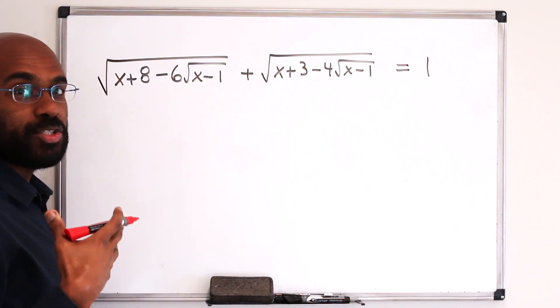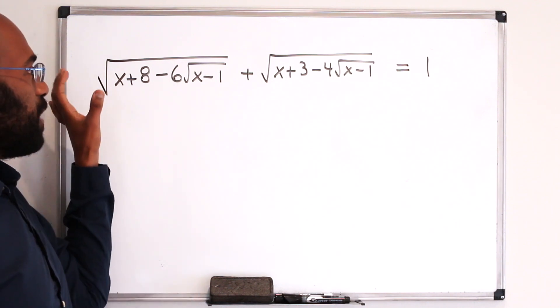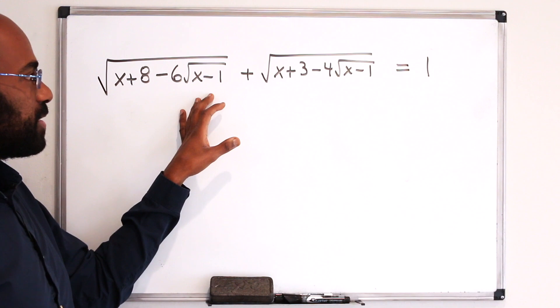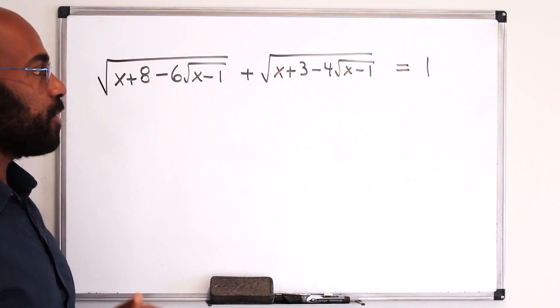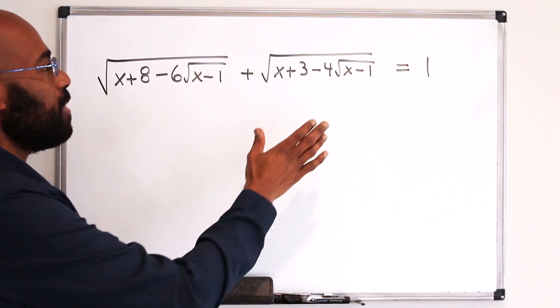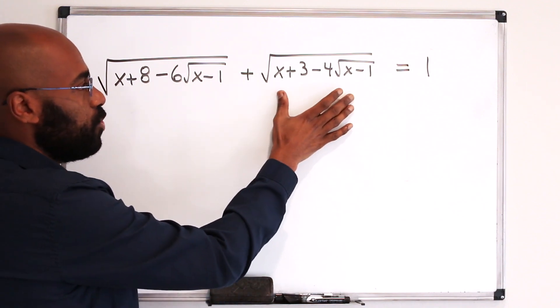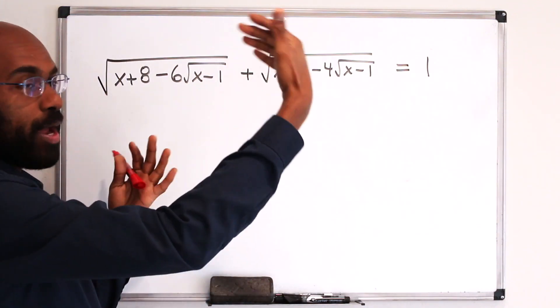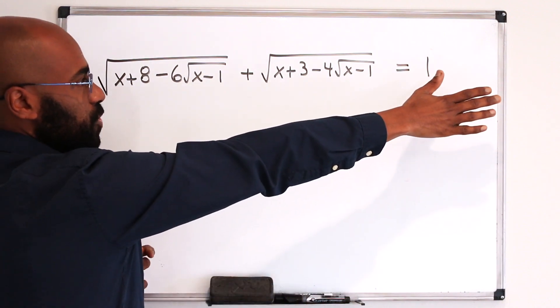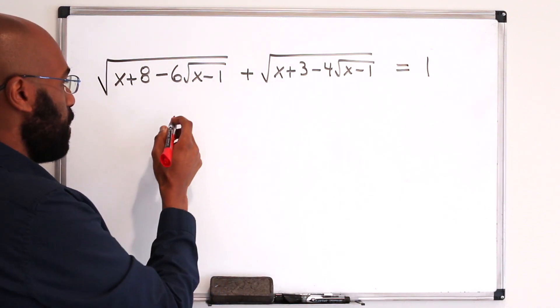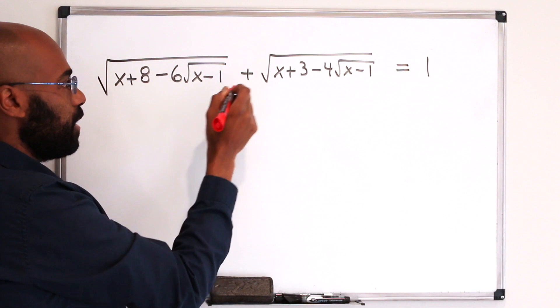I want to take a look at what our intuition would say about it. So you have the square root of something that has the square root inside of it, and the same thing over here. So you can imagine the following, you might do the following if you were to go about this a traditional way. You subtract this and square,